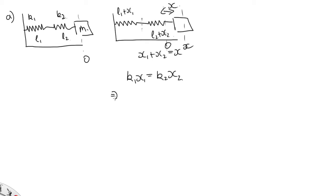So we can write x2 is equal to k1 on k2 x1. Now we've got that x, the total displacement, is x1 plus x2. And we can write this as x1 plus k1 on k2 x1, just substituting in from here. So this is equal to 1 plus k1 on k2 x1.